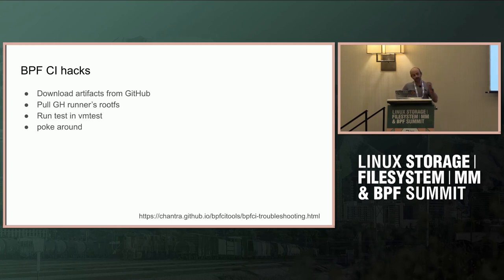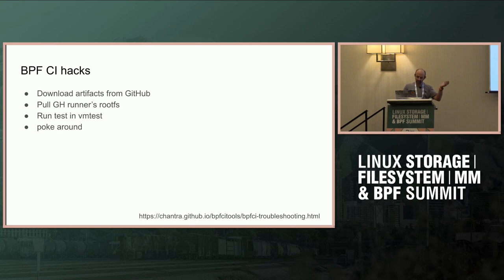Now, how about when there's an error in the CI and you can't reproduce it locally because your environment is totally different? Here there are a few steps: get the artifacts from GitHub, get the rootfs used in the CI, and use vm_test to get access to a VM that matches what the CI used, then do whatever you need to do.